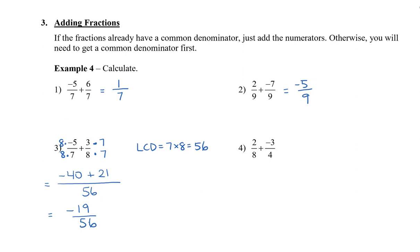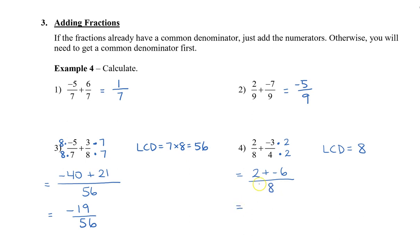Now the second one here, the denominators are 8 and 4, so they're different. But this time we don't have to multiply 8 times 4, because we already know that 4 goes into 8. So therefore, my lowest common denominator is 8. The first fraction is already okay; I need to multiply the second fraction by 2 over 2. So now I have 2 plus negative 6, with a common denominator of 8 in the denominator. Then 2 plus negative 6 is negative 4 eighths, and we're going to reduce that to equal negative 1 half.